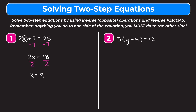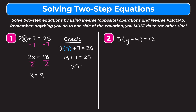We're going to check our answer by plugging in what we got for x into our original equation and seeing if both sides are equal. So instead of 2x plus 7 equals 25, we plug in 9 for x: 2 times 9 plus 7 equals 25. 2 times 9 is 18, so we have 18 plus 7 equals 25. 18 plus 7 is 25, so 25 equals 25. Both sides are equal, so x equals 9 is correct.